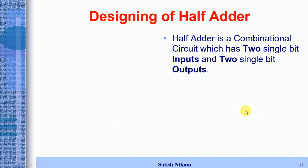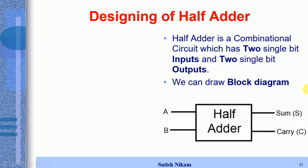From this information we can draw the block diagram of the half adder circuit, which we can see on the screen. In this half adder circuit we have two single-bit inputs A and B, and two single-bit outputs — Sum and Carry — denoted by S and C.